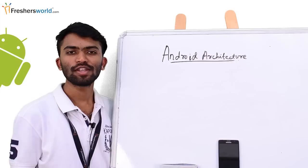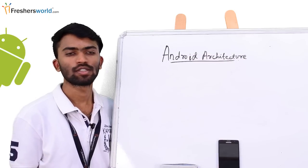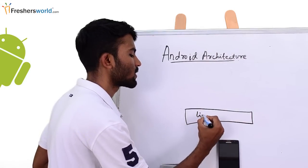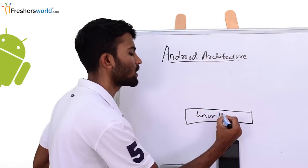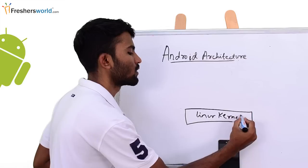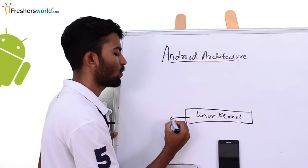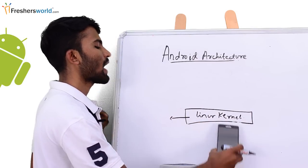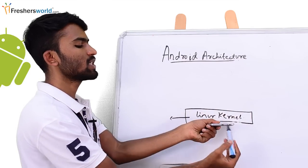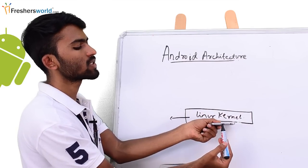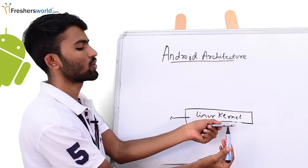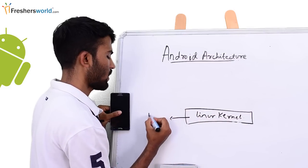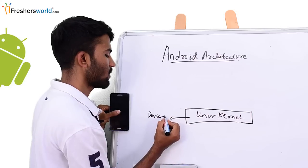The Android architecture would consist of four layers. The base layer would be the Linux kernel. So now what is a Linux kernel? What it consists of? As I showed you, this is my headset jack and this is my charger jack — these are nothing but device drivers.